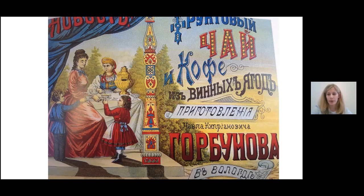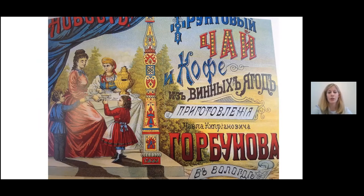Here we have an image that is quite comparable to the one that preceded it. This is an advertisement for Pavel Gorbunov's fruit tea and coffee, produced during the late 19th century. The previous advertisement appeared on a wrapper for the tea itself; here we have a large colorful poster. Again, we see a family dressed in expensive Western clothing being served tea by a peasant woman in traditional clothing. The family sits on the porch of what appears to be an estate in the country, perhaps one that was once funded by the profits of serfdom. As on the tea wrapper, the peasant woman's status is ambiguous, but the allusions to a nostalgic, sentimental vision of serfdom are evident.